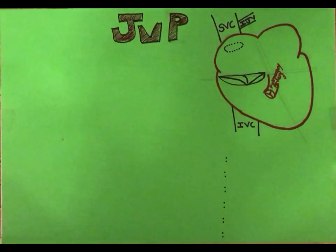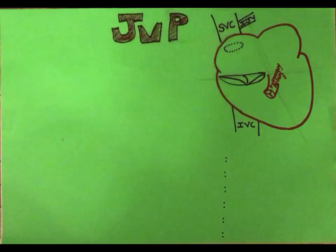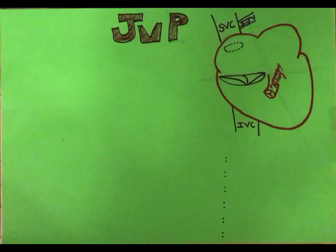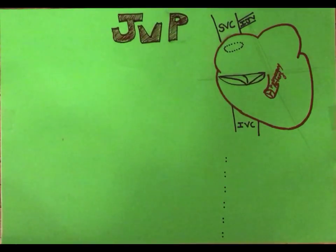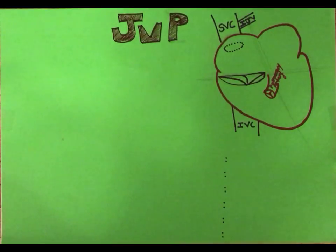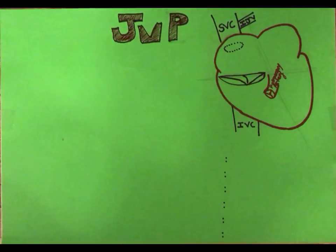Today we are going to talk about a very interesting subject: the JVP. First, we need to know what JVP is — the jugular venous pressure — and why we need to measure it. The JVP reflects the pressure that is building up inside the right atrium. We measure the JVP because it can be elevated in pathological conditions, for example in heart failure.